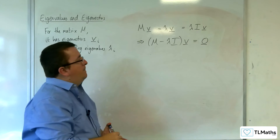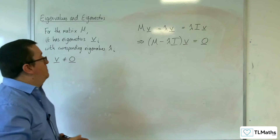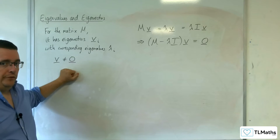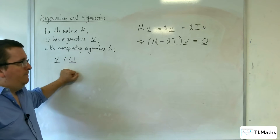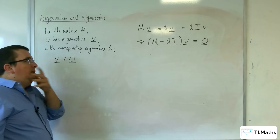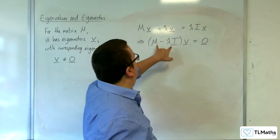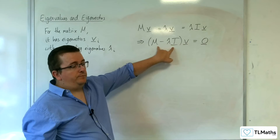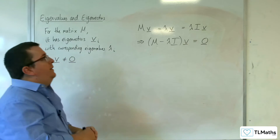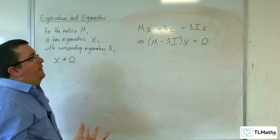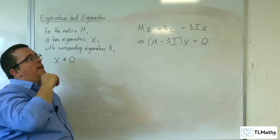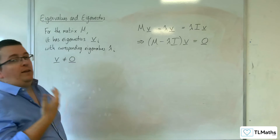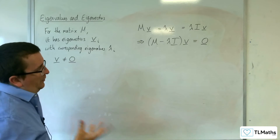Now this is the important bit. Remember that your eigenvector cannot be equal to the zero vector. So if that is the case, then the matrix (M − λI) has got to be special — let's be clear on what this is. M here is representing a matrix and V is representing a vector, so it looks very convoluted.